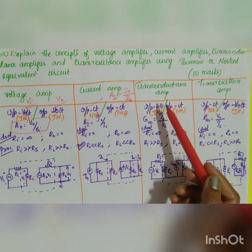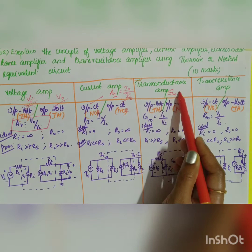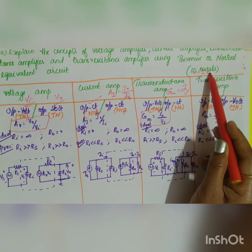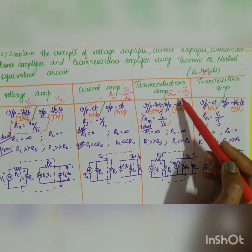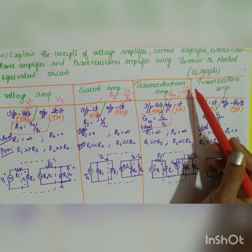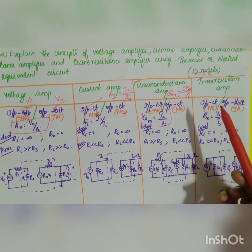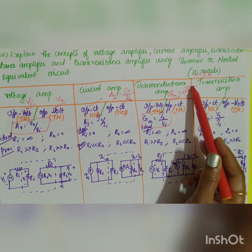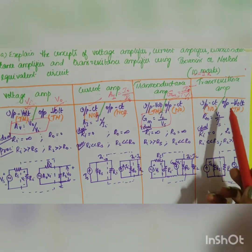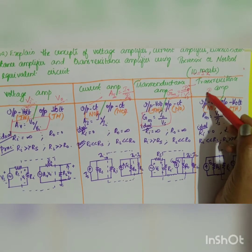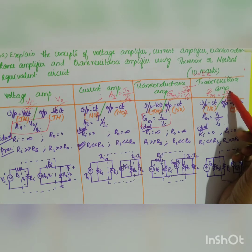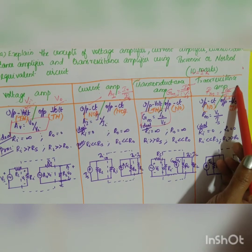For the transconductance amplifier, transconductance is the opposite of resistance. Resistance R equals V/I, so transconductance Gm equals I divided by V. The gain is output current divided by input voltage, so the output uses Norton's equivalent circuit and the input uses Thevenin's equivalent circuit — a combination of both. For the transresistance amplifier, the gain Rm equals V divided by I, which is output voltage divided by input current. The output uses Thevenin's and the input uses Norton's equivalent circuit.